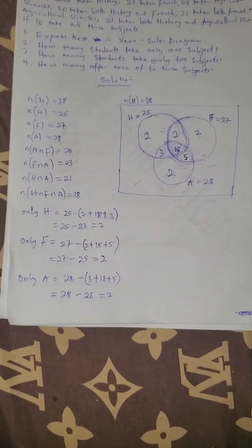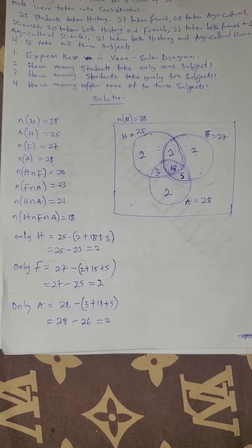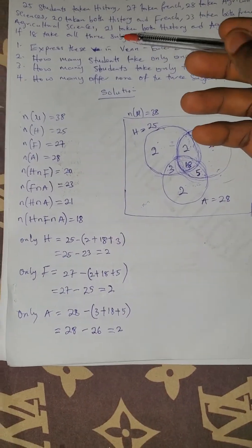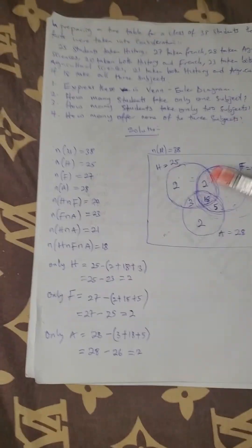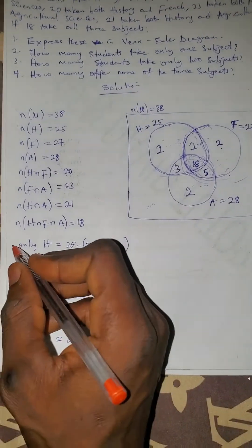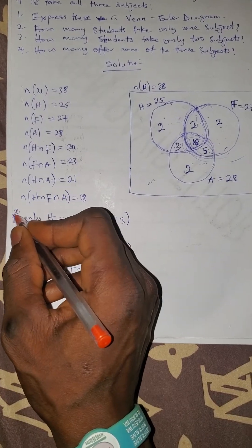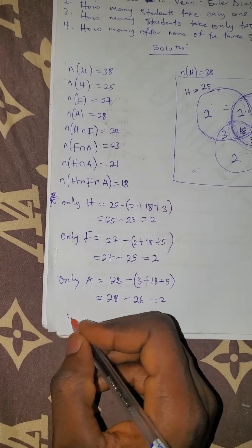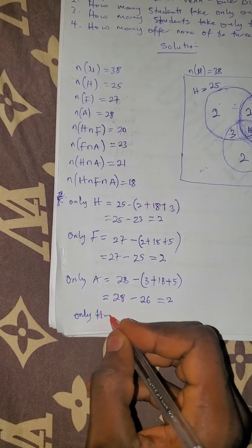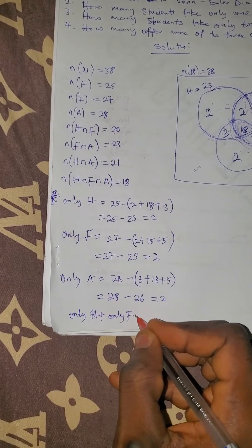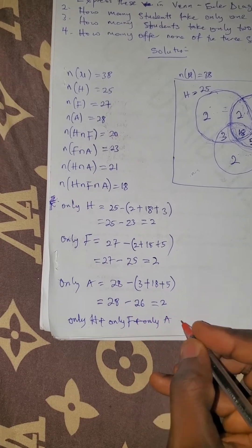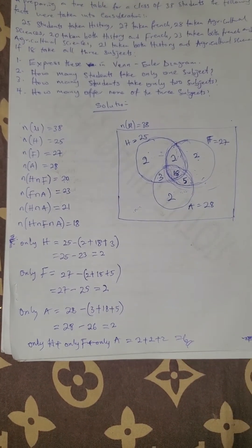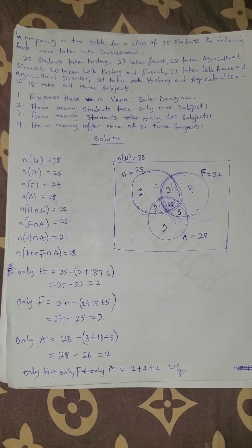Question two asks: how many students study only one subject? Only one subject equals only History plus only French plus only Greek, which is 2 plus 2 plus 2. The answer is 6. The number of students that study only one subject is 6.